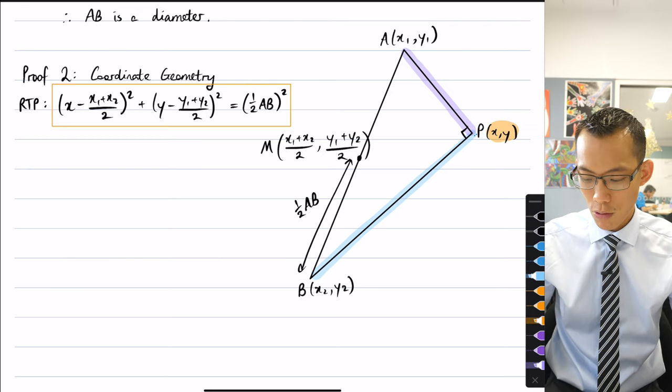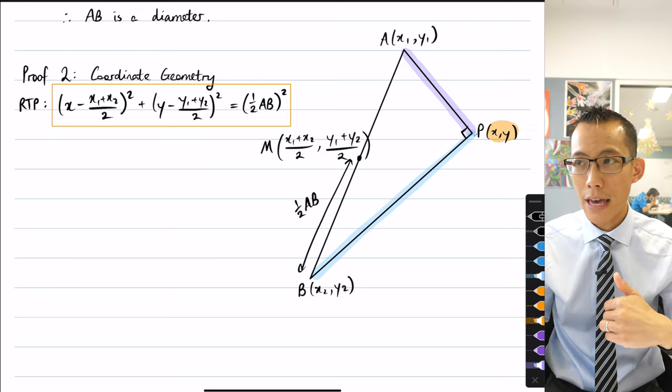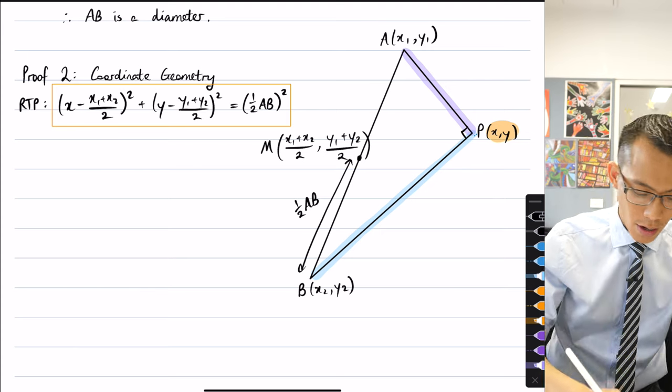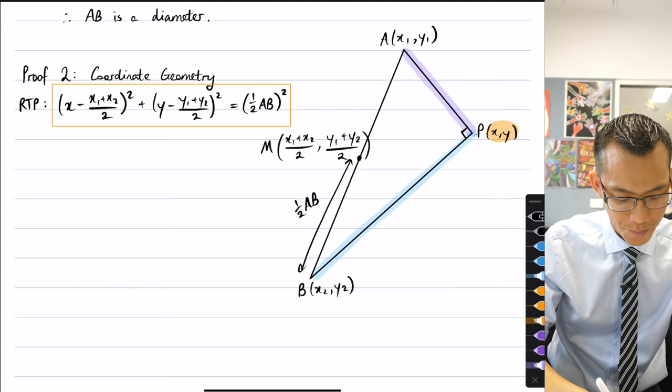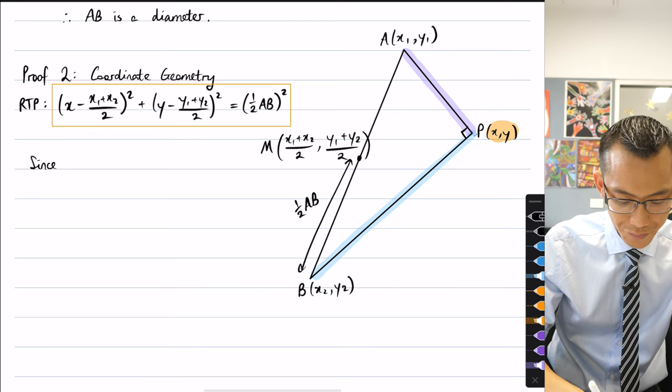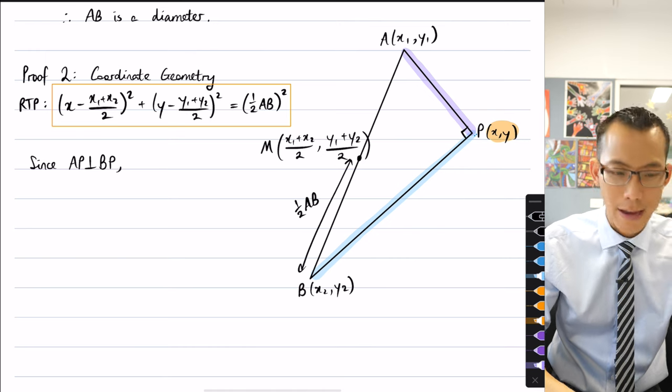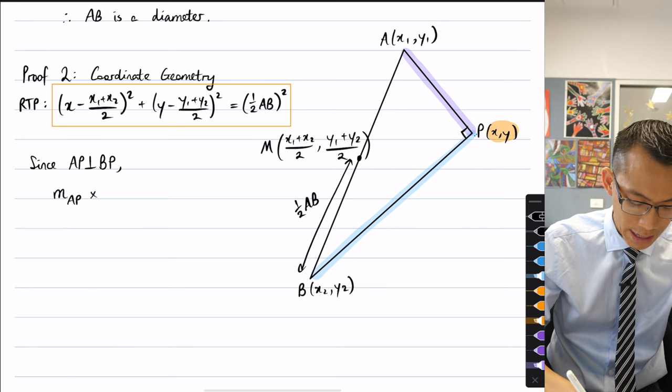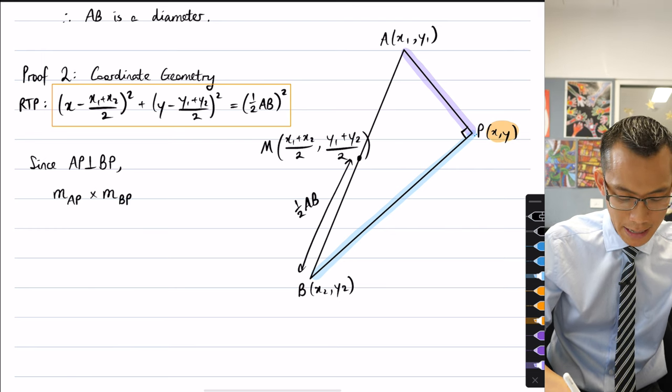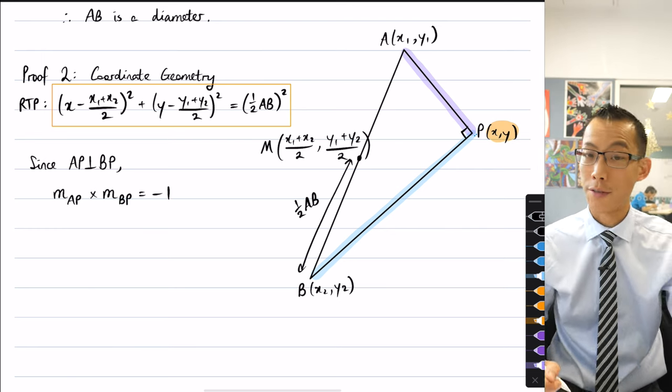what you know is that these two lines are perpendicular, which produces a relationship between their gradients, namely that they are negative reciprocals of each other, or that if you multiply them together, you get negative one. So let me write out some of that logic. I can say, since AP is perpendicular to BP,